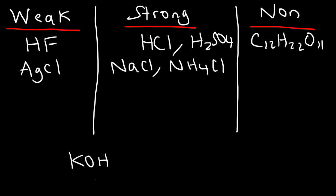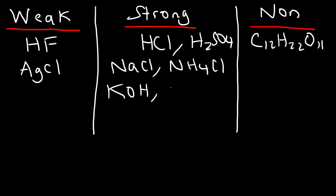What about potassium hydroxide, KOH? KOH is a strong base. Group one metals — alkaline metals — are always soluble, which means they ionize completely, so KOH is a strong electrolyte. Another example of a strong base is barium hydroxide: it's soluble, releases a lot of hydroxide ions in solution, and ionizes well, making it a strong electrolyte too.